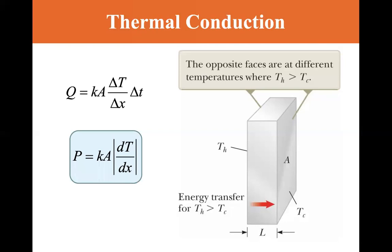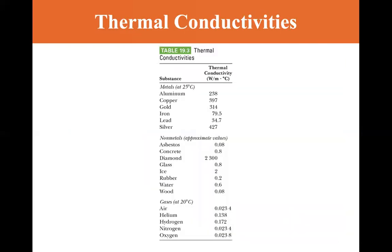Power P is equal to K times A times dT/dx. Here's our table of thermal conductivities, and you'll see that the metals are very good conductors. The best one here is silver, at 427 watts per meter per degree Celsius. Copper is very good at 397 watts per meter per degree Celsius. You can see iron and lead — lead is a poor conductor. It will conduct, but it's very slow at 34.7 watts per meter per degree Celsius.